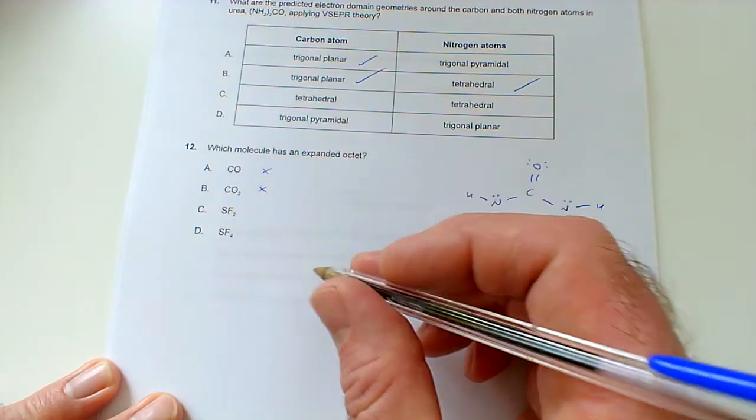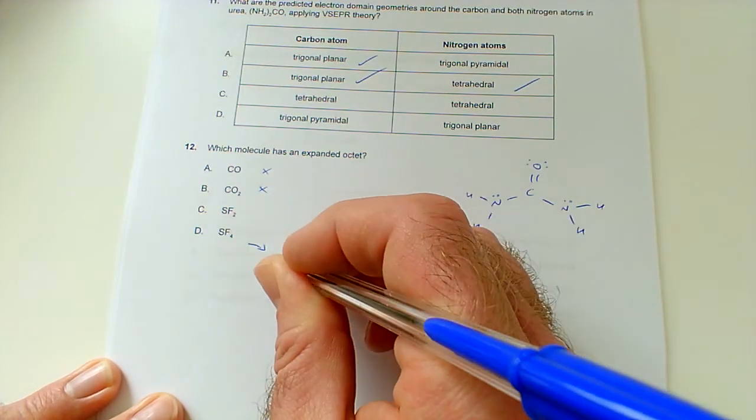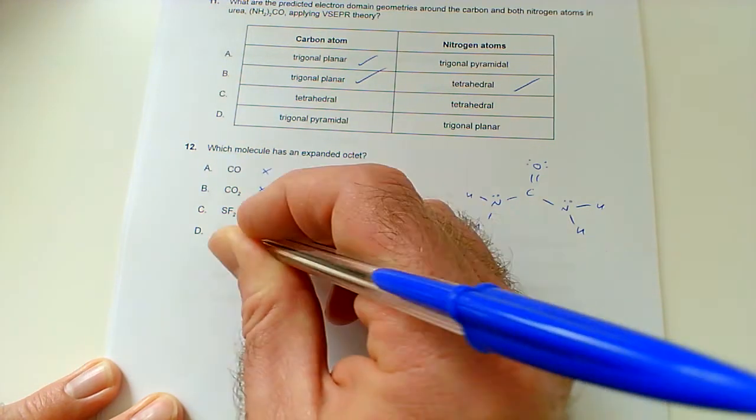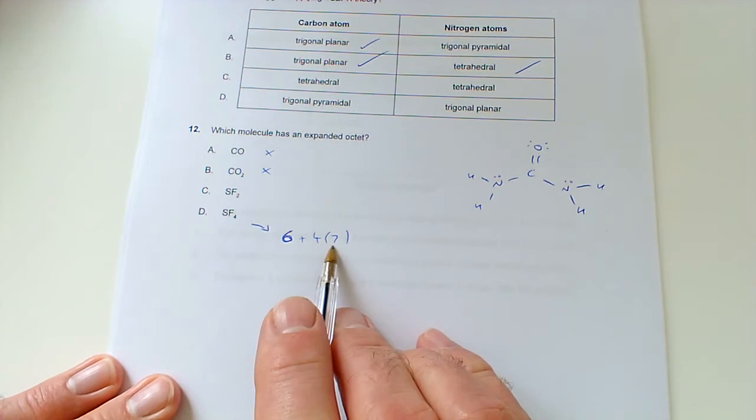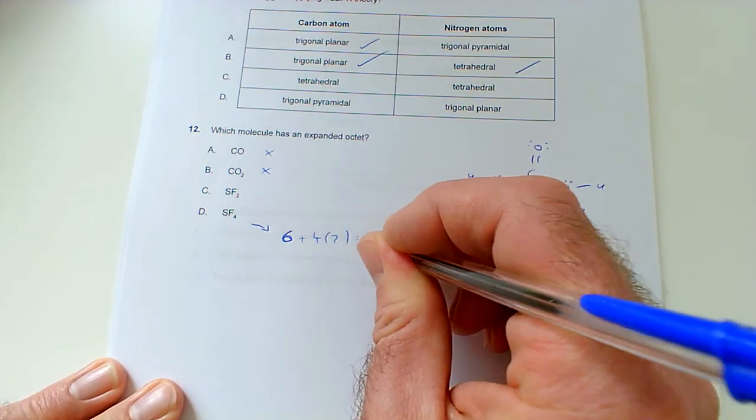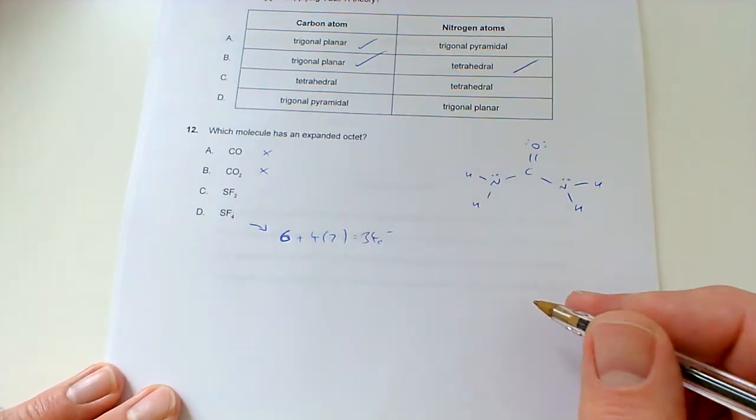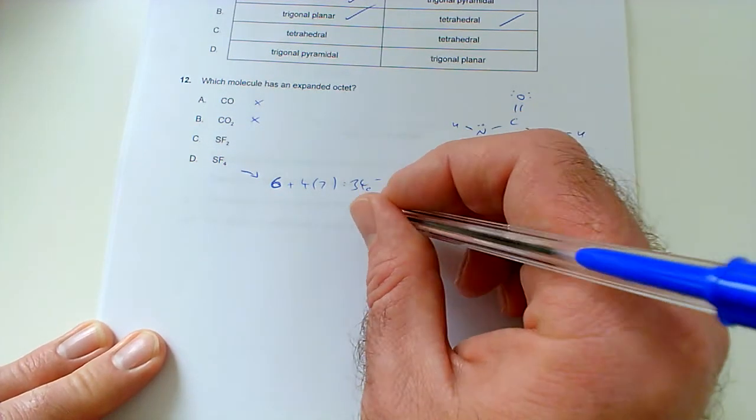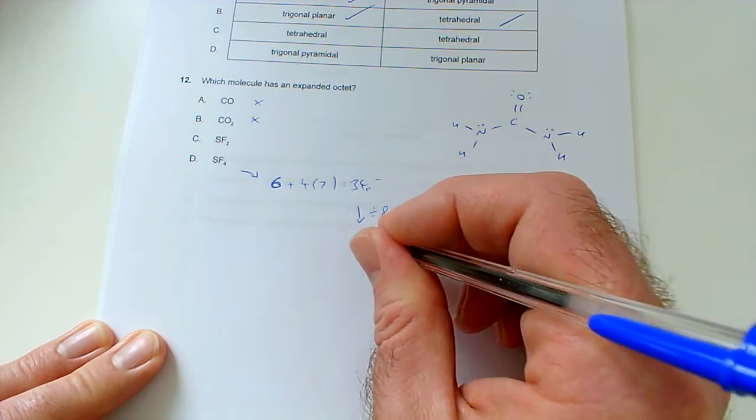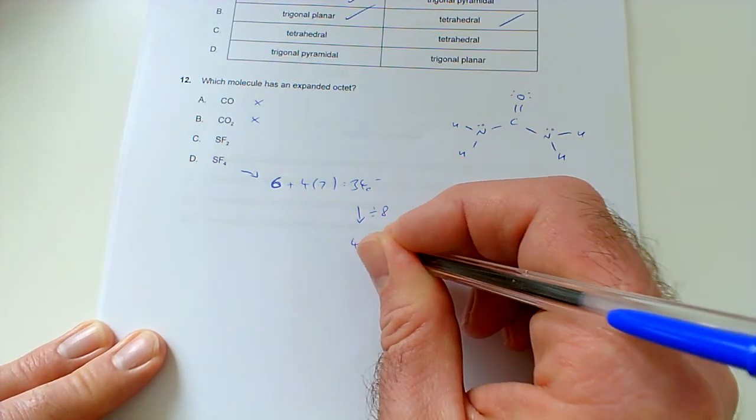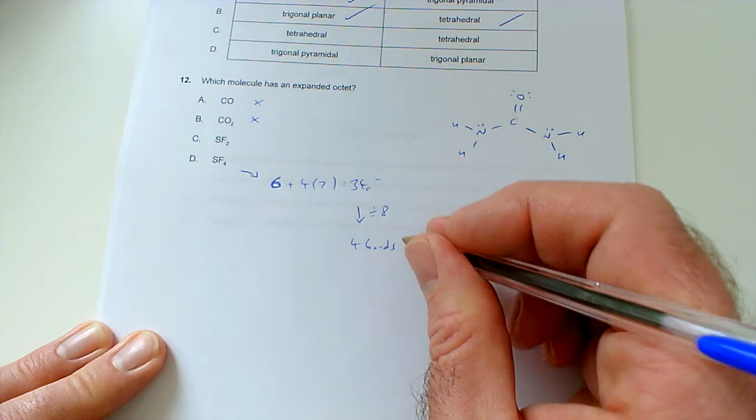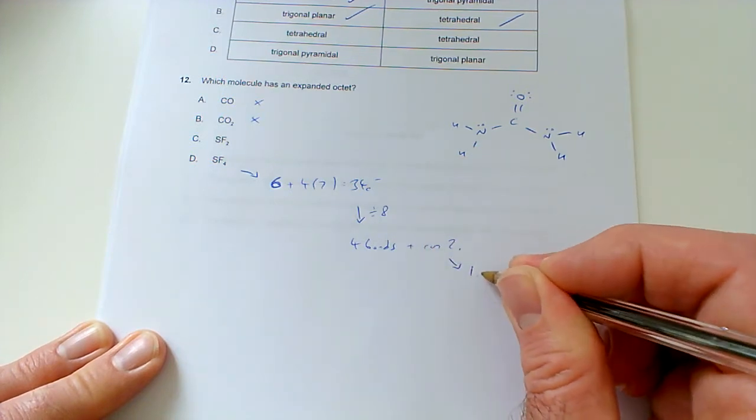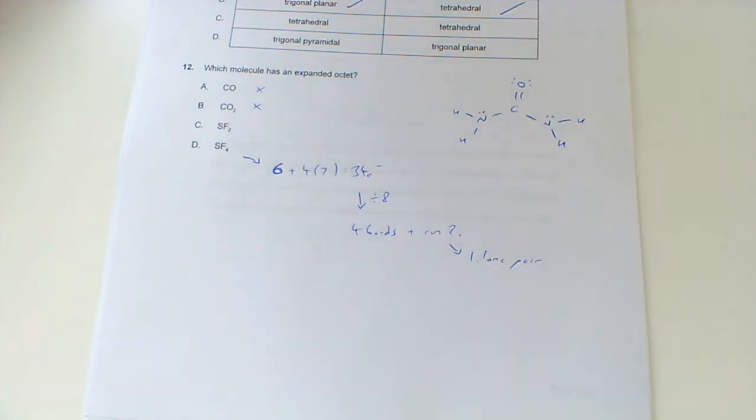To show how this works, what shape would this be with the expanded octet? Sulfur is group six, and then there's four fluorines which are in group seven. Four sevens are 28, plus six, that's 34 electrons. How many of those are going to be bonds? How many times does eight go into 34? It goes into it four times, so that's four bonds.